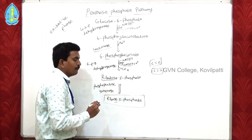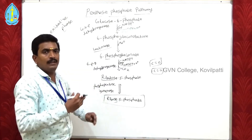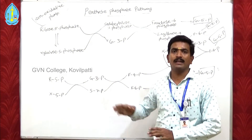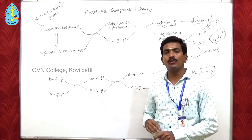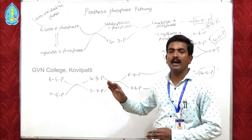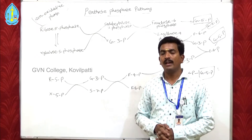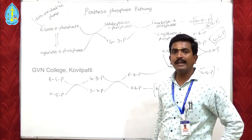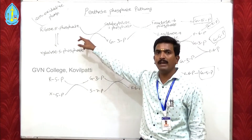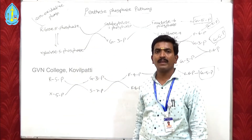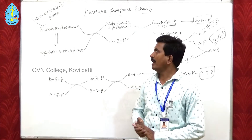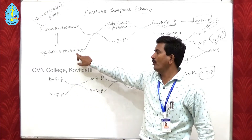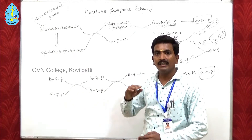The ribose 5-phosphate produced in the oxidative phase enters the non-oxidative phase. In the non-oxidative phase, ribose 5-phosphate is eventually converted back into glucose 6-phosphate. The first step is ribose 5-phosphate is converted into xylulose 5-phosphate with the help of the enzyme pentose phosphate epimerase. This process is reversible.